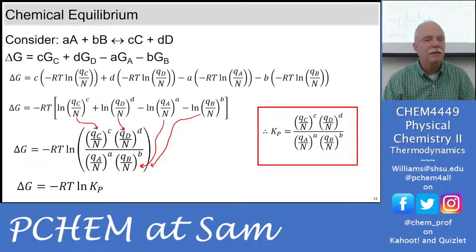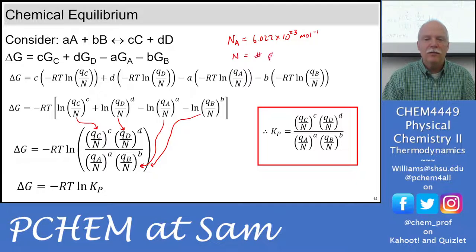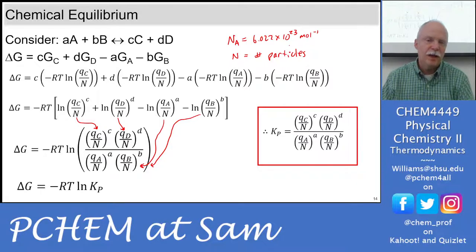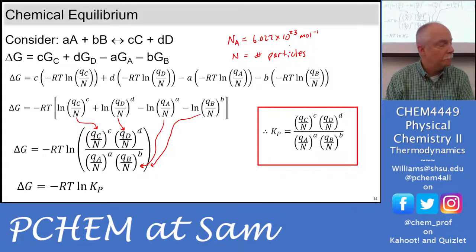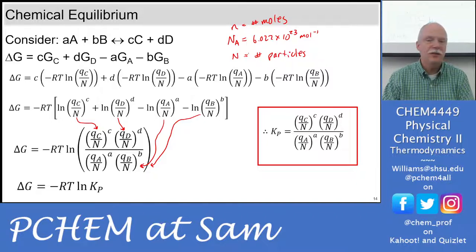Can you explain the difference between N versus N_A? N_A with subscript A is Avogadro's number. Little n is normally moles. Capital N with no subscript is the number of particles — you get that by multiplying moles times Avogadro's number. So those are the three definitions: N_A is Avogadro's number, lowercase n is moles, and uppercase N is the number of particles.